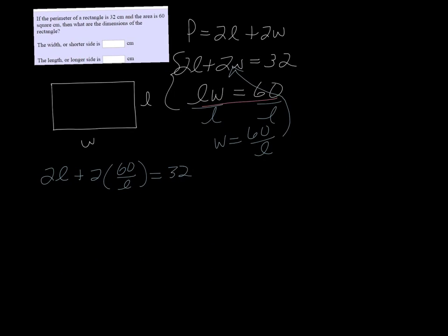All right, so we don't want our variable to be in the denominator when we're trying to solve an equation. So to get it out, we're going to multiply both sides by l.